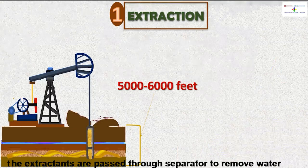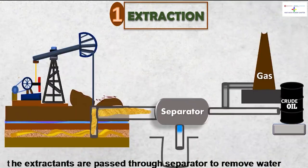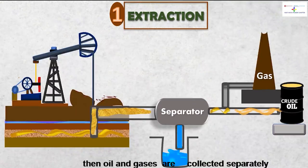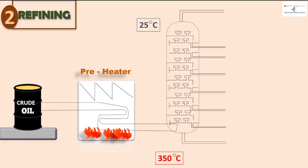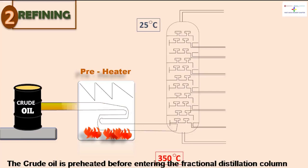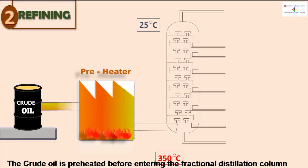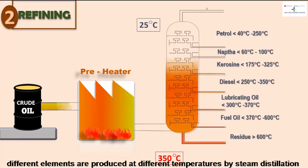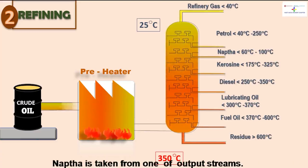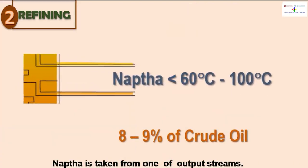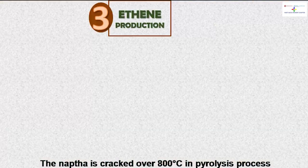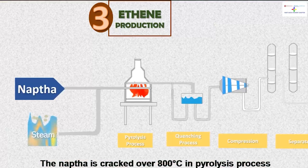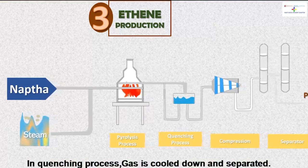Step one is extraction, which can be from the ground or sea. The extracted materials are passed through separators to remove water, and then oil and gases are collected separately. The crude oil is preheated before entering the fractional distillation column, where different elements are produced at different temperatures. Through steam distillation, naphtha is taken from one of the output streams.